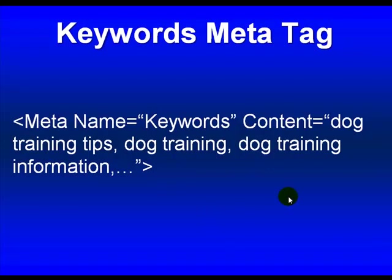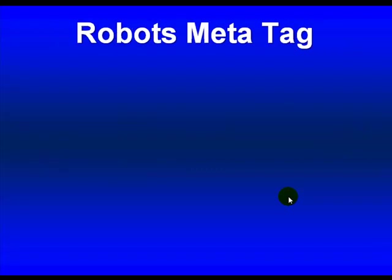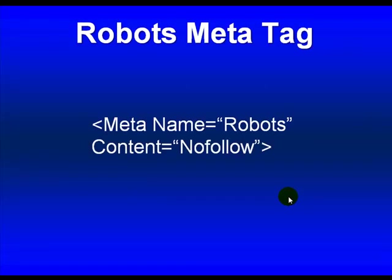Some people say keywords don't count that much anymore, and that's something you could argue about. I do include them because I think it's not going to hurt as long as you don't overdo it. The robots meta tag is also something you see a lot of. Basically, it's used to tell the search engines if you don't want them to index your page — for example, if you have a private page. The default is that they will follow, so you don't actually need it. But I wanted to include it. So that's the meta section — the basic gist of it.